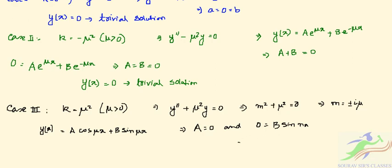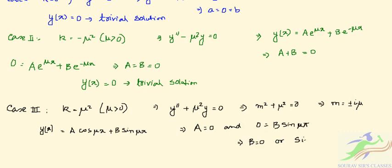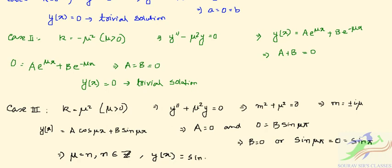From B·sin(μπ) = 0, either B = 0 or sin(μπ) = 0. For a non-trivial solution we need sin(μπ) = 0, giving μ = n where n is a positive integer. So y(x) = B·sin(nx) are the non-trivial extremals.